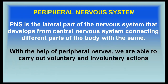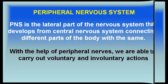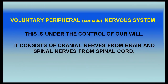The peripheral nervous system is the lateral part of the nervous system that develops from the central nervous system, connecting different parts of the body with it. With the help of peripheral nerves we are able to carry out voluntary and involuntary actions. The voluntary peripheral nervous system, also called the somatic nervous system, is under the control of our will and consists of cranial nerves from the brain and spinal nerves from the spinal cord.